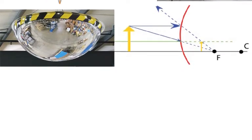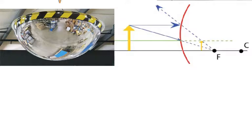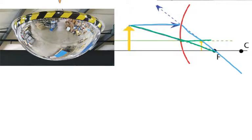If you have an object, the first ray goes parallel through the focal point of curvature, which is on the other side. The second ray goes toward the focal point, but as soon as it hits the mirror it goes parallel. Where they meet is where the actual image is. In convex mirrors, all images are going to be virtual because the rays do not meet at that point.